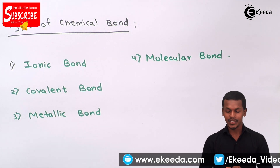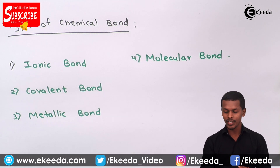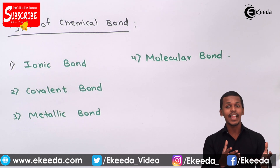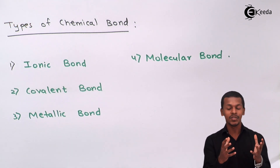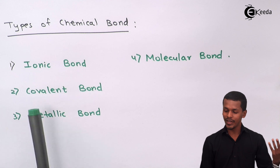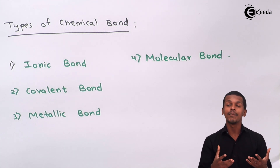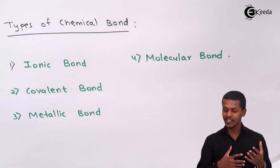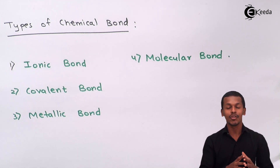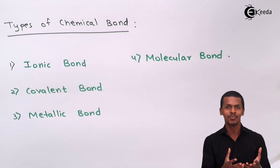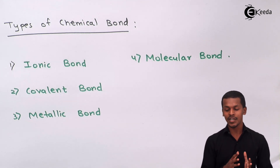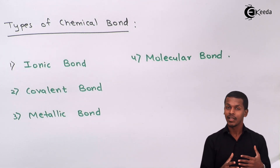As the name suggests, ionic bond is a force of attraction or a bond that takes place between a cation and an anion, forming a molecule. Covalent bond is a bond formed between two atoms sharing their own valence electrons through mutual sharing. Metallic bond is a bond formed between two metal atoms. Molecular bond is a special kind of bond — for example, hydrogen bonding.